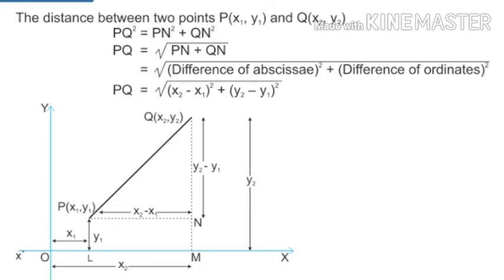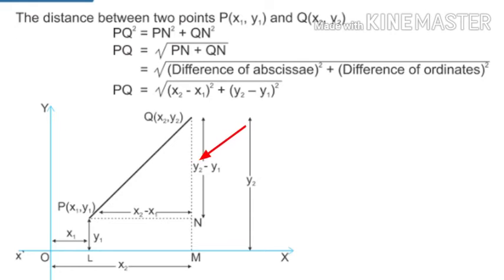For MN: since LP is y1, MN is also y1. And QM is y2, so QN = y2 - y1. From y2 if I subtract y1, I get QN. So the distance of QN is y2 - y1. Now I have two sides of the right-angle triangle.